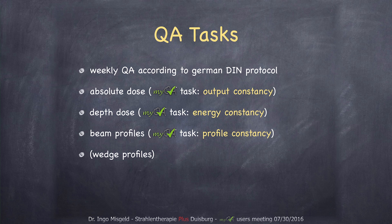This is weekly QA. We measure absolute dose, depth dose, and beam profiles. For this we use the MyQA tasks: output constancy, energy constancy, and profile constancy. There's also a MyQA test called wedge profiles, but we still haven't used this — we're going to implement it in the next time.